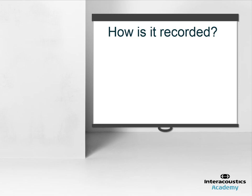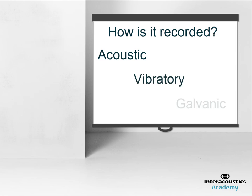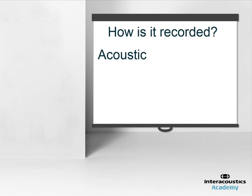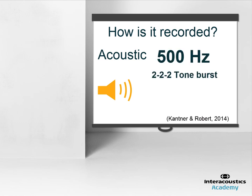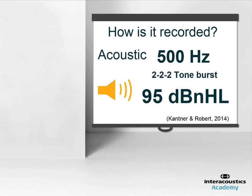The OVEMP can be elicited by either an acoustic, vibratory or galvanic stimulus. Clinically, the most common method of recording the OVEMP is through using an acoustic stimulus, such as a 222 tone burst, at a loud intensity, usually around 95 dB NHL.